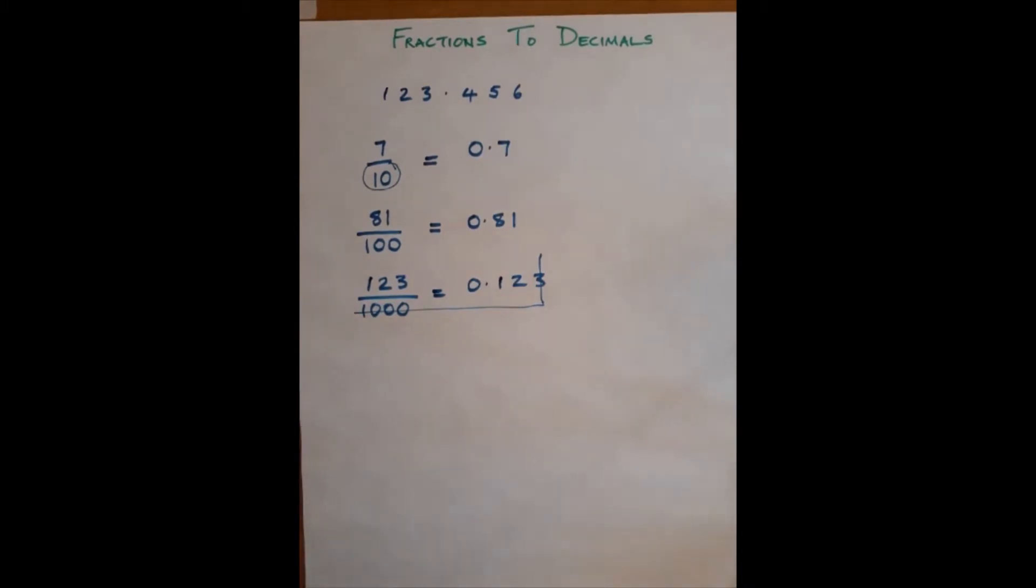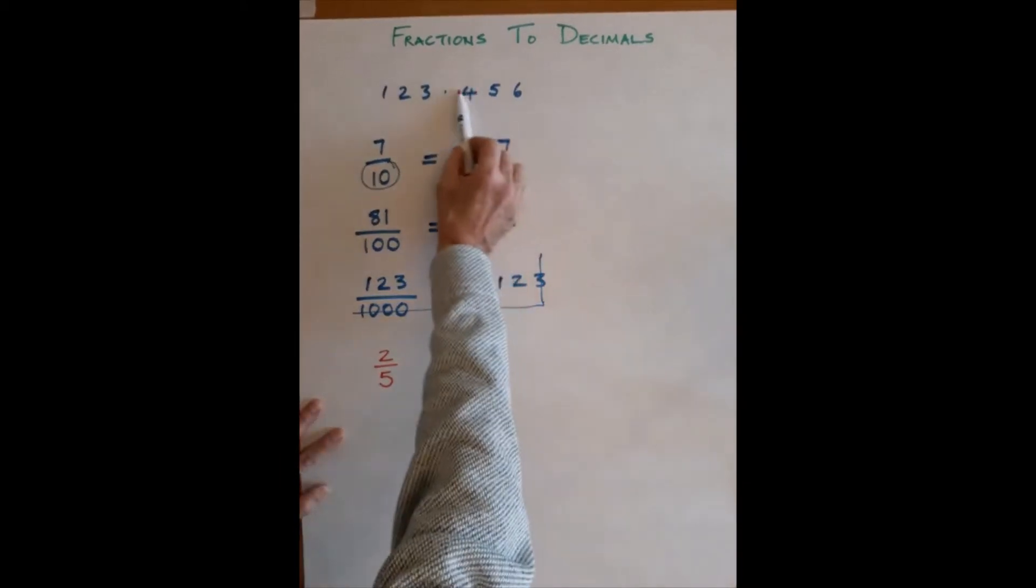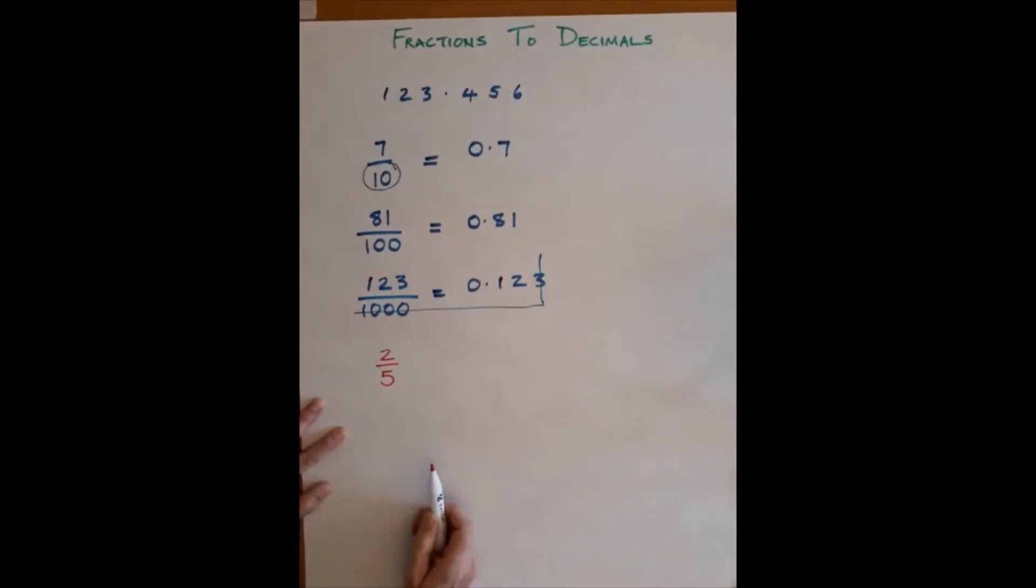So the reality is many of our fractions won't have a 10, a 100, or a 1000 on the bottom, but they could have a variation which is easily changed. For example, we may have the number 2/5. So we haven't got a 10 here or a 100, so it doesn't immediately drop into this system.